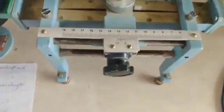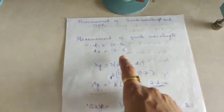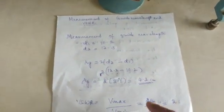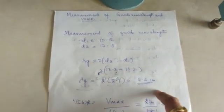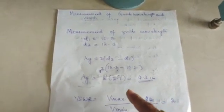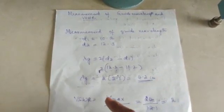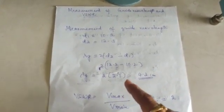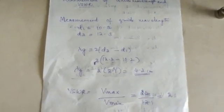Now I am finding out the second minimum here and should note this scale reading, I am writing it as 12.3. The formula lambda g equals 2 into d2 minus d1. 2 into d2 is 12.3 minus 10.2, so lambda g equals 2 into 2.1, that is 4.2.